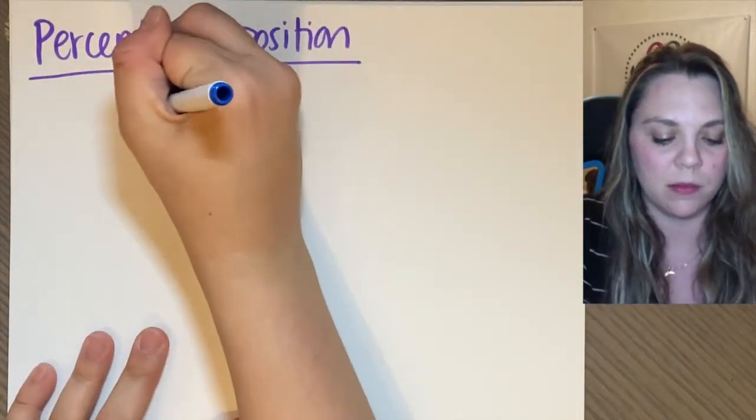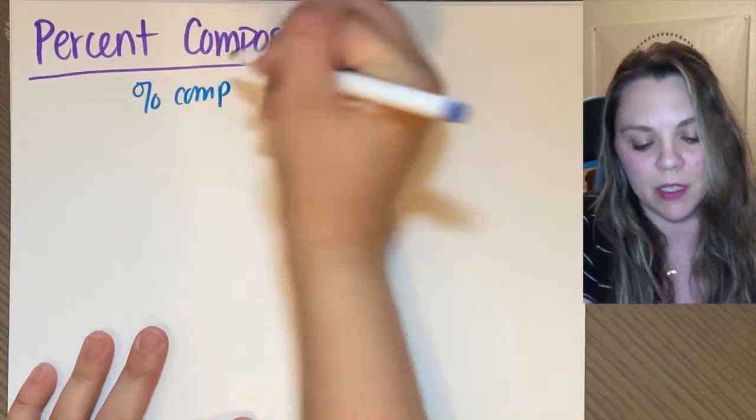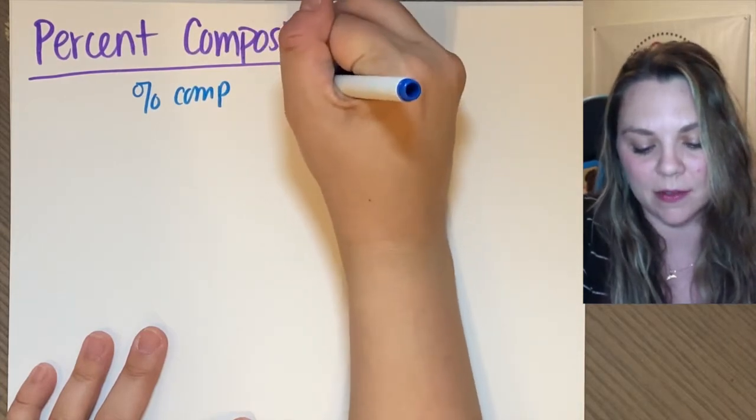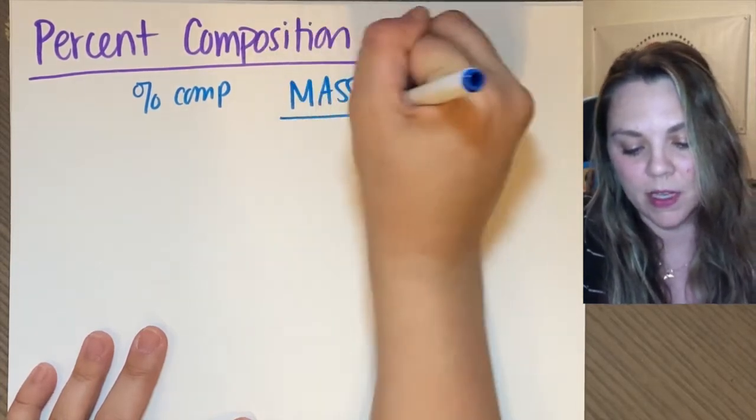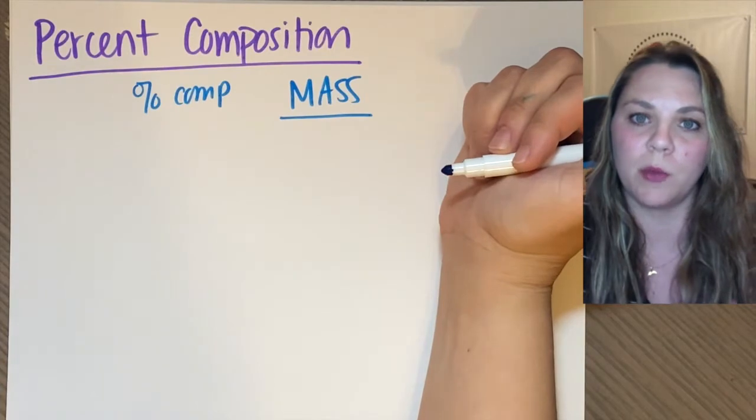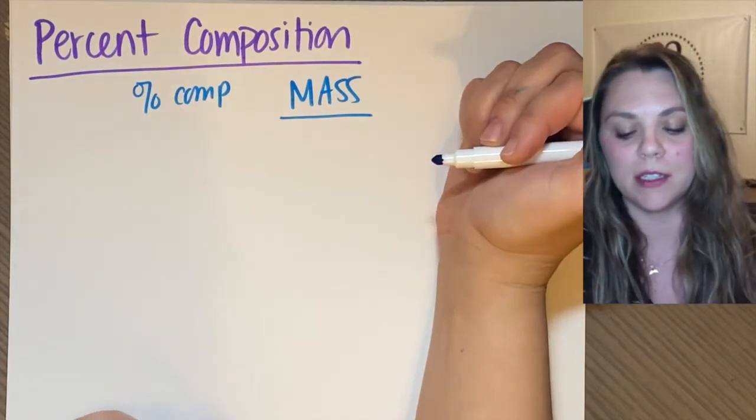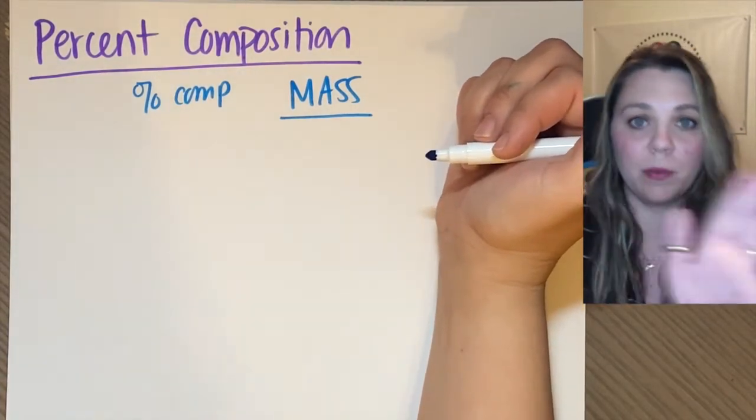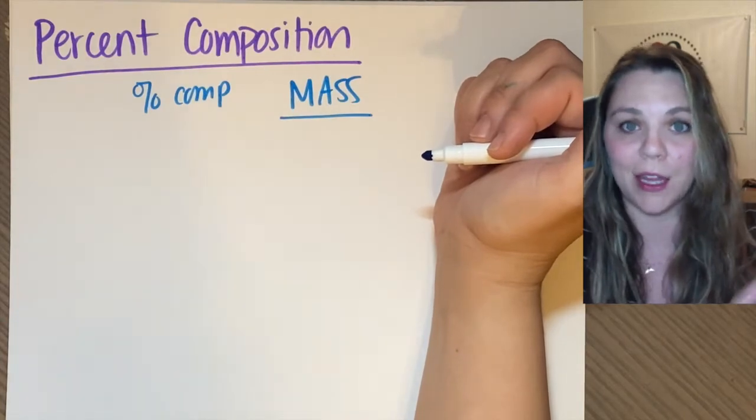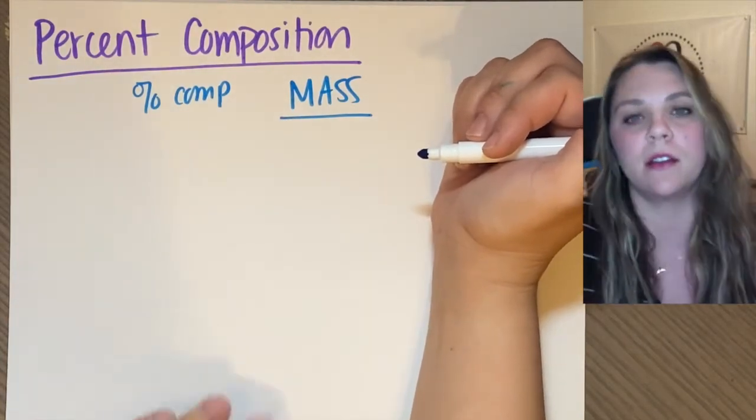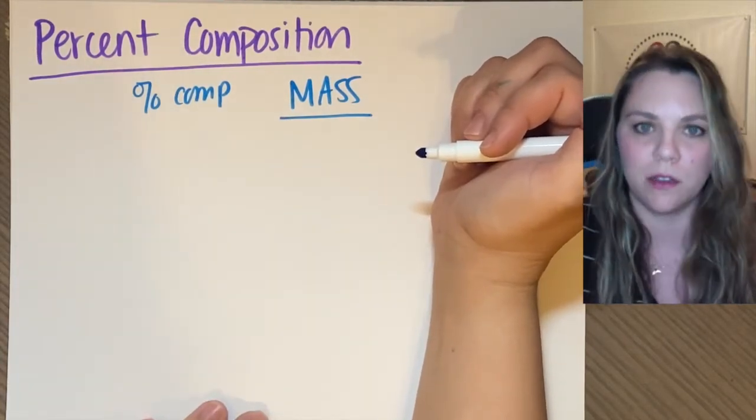So percent composition is always going to be by mass. You're going to need to know how to calculate your molar masses, or you're going to need to at least be able to look at your periodic table and find the elements to find their average atomic masses. You got this.